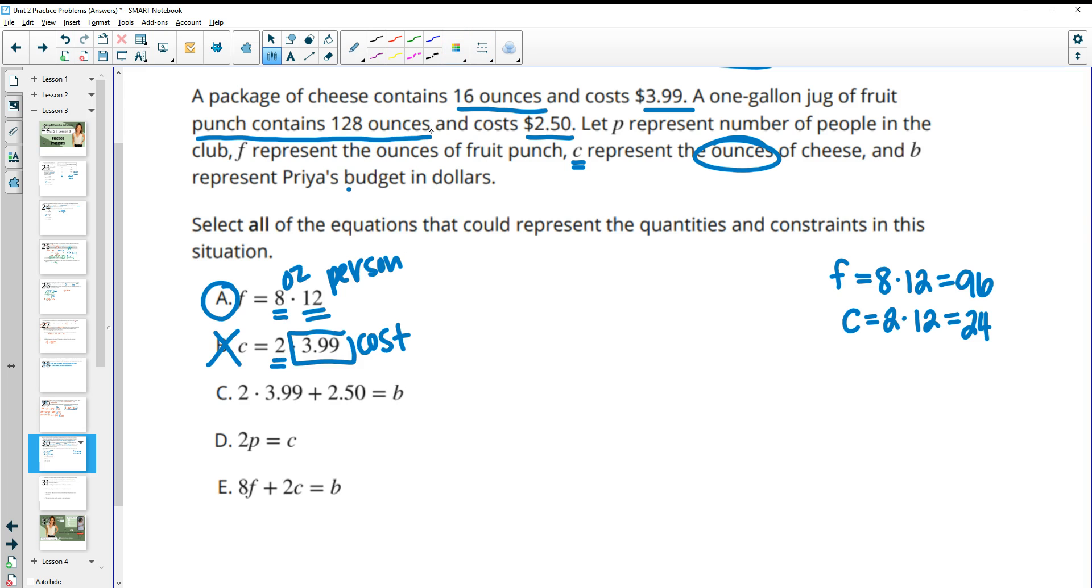Part C is telling us two times 399 plus 250 equals B. So this one is talking about B, which is the budget in dollars. So this one is saying that we're having two packages of cheese since that's the 399. So we're going to have to check if that's what we need. And then 250 is the punch. So the punch gets us 128 ounces and we only need 96. So we do only need one gallon of fruit punch. So that's correct, spending 250. Then for the cheese, the cheese is 16 ounces. We need 24. So we are going to need two packages of cheese to get to 24 ounces. That'll get us 32 ounces, but that'll get us enough to cover the 24 ounces we need. So two packages of cheese at 399 and one gallon of fruit punch is our budget. That is true.